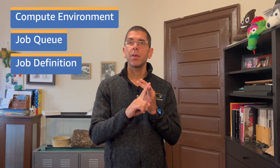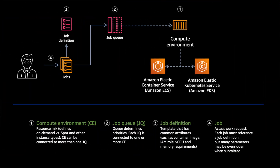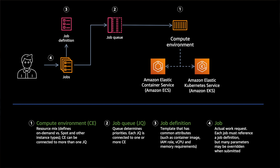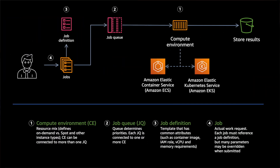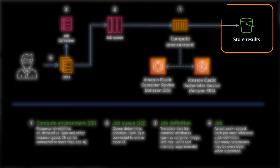Now that you've created a compute environment, a job queue, and a job definition template, you're ready to submit and run your jobs. You submit a job request by referencing the job definition and the job queue to use. You can optionally override some of the defaults and parameters defined within the job definition. AWS Batch sees that there are job requests in the queue and starts allocating compute resources for them to run on. When that compute is ready, Batch places the jobs on the allocated resources within that compute environment. At the end of the job, most applications write out a result to some resilient storage — in this case, the application writes results to an Amazon S3 bucket as object storage.